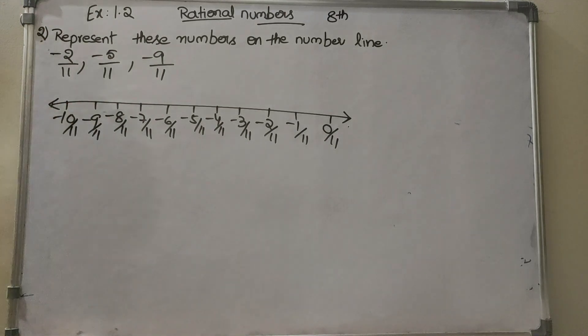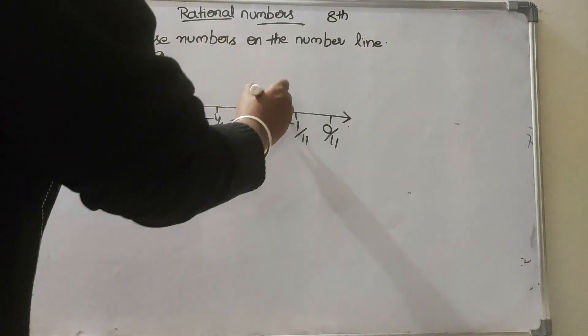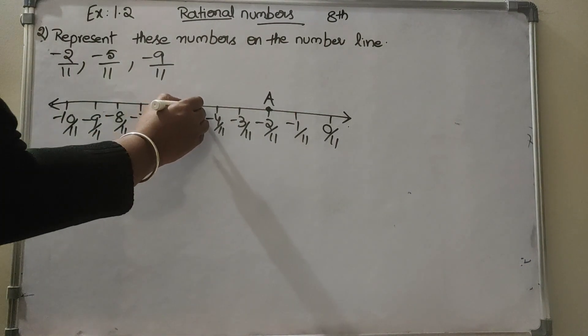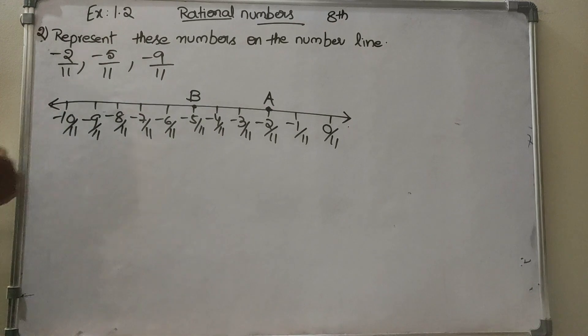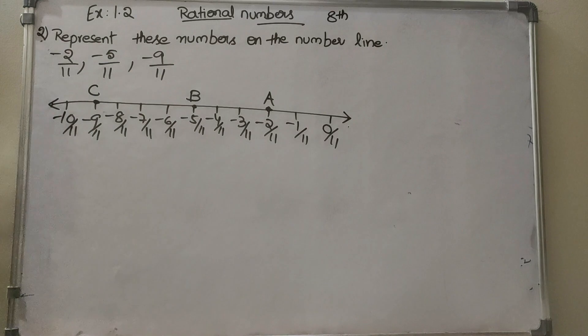So here the first point is minus 2 by 11. Consider it as point A. Minus 5 by 11 is the B point, and minus 9 by 11 as C point. So these points on the same number line like this.